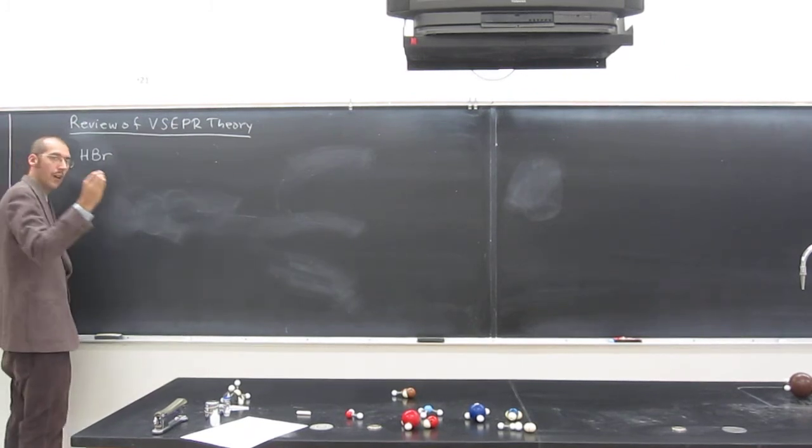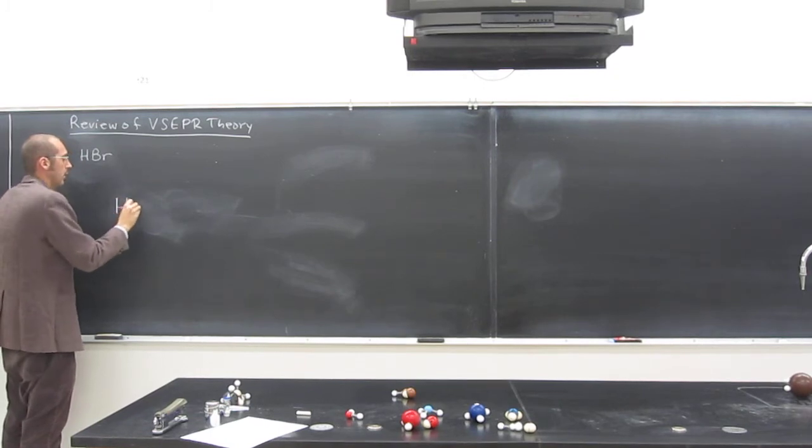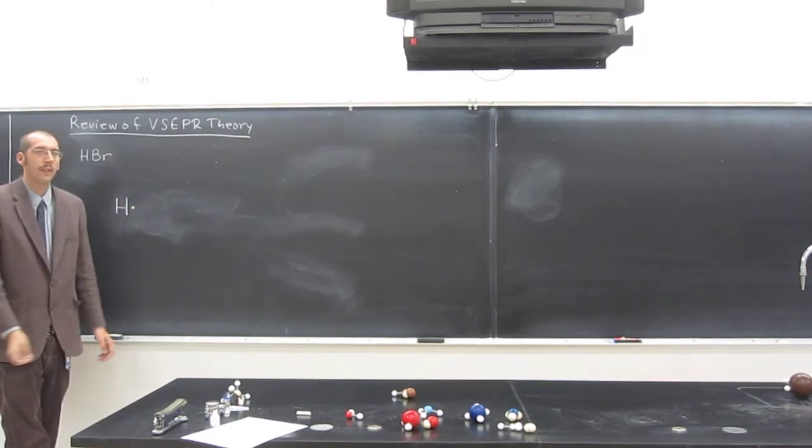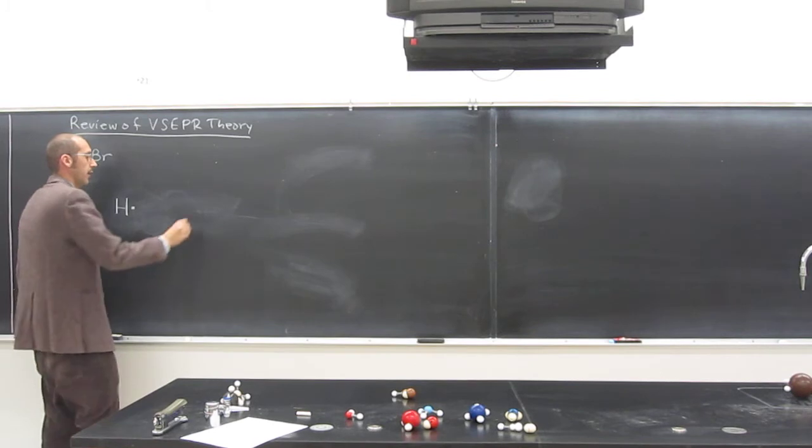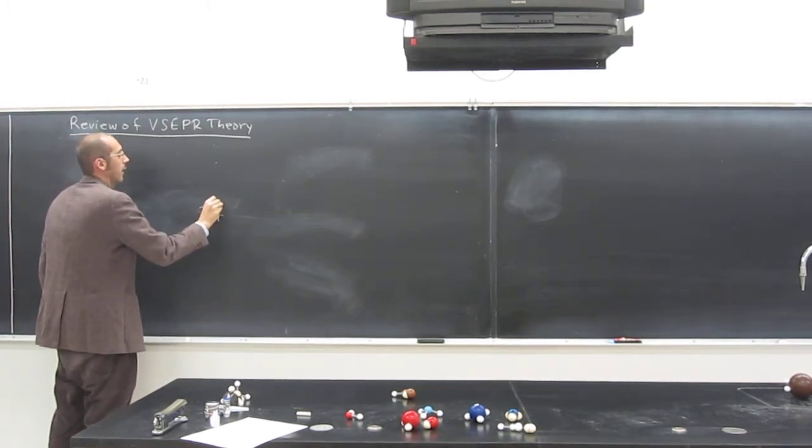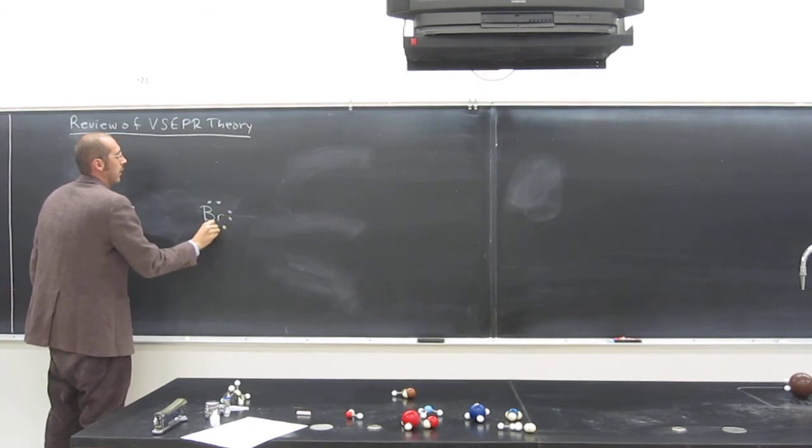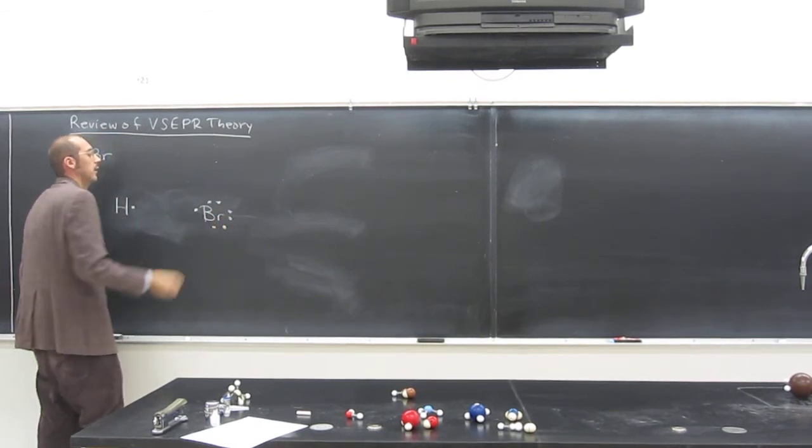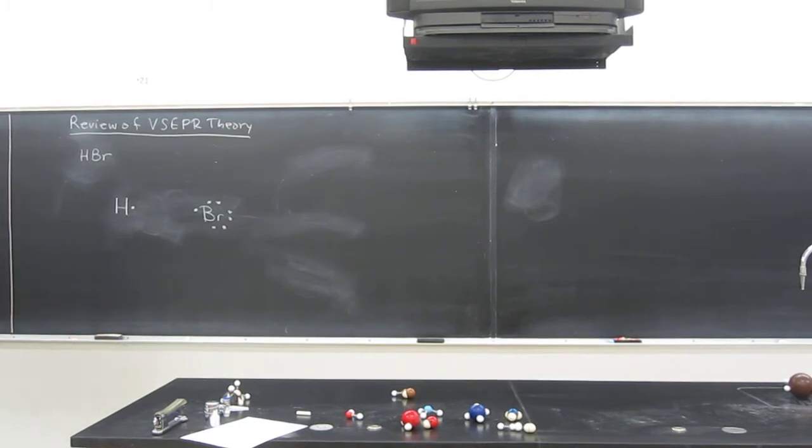So, draw the Lewis structure of both of those atoms. So hydrogen looks like that, right? What does bromine look like? And remember, you want to draw these in such a way so you can make these fishhook arrows. Okay, so that's a bromine atom.